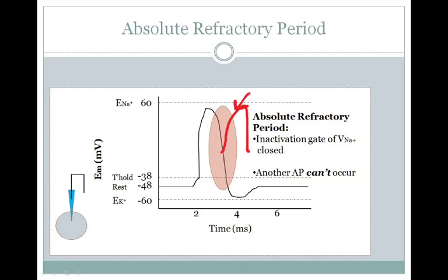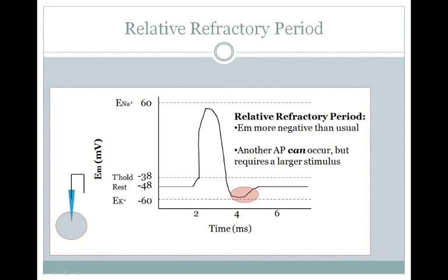The relative refractory period is the time in which the membrane potential is more negative than rest. Another action potential can occur because by this time the inactivation gate of the voltage-gated sodium channel is open, but because the voltage-gated potassium channels are slow to close, membrane potential goes below rest — closer to the equilibrium potential of potassium — and it takes a larger stimulus to produce an action potential. During the relative refractory period, another action potential can occur, but it requires a larger stimulus.